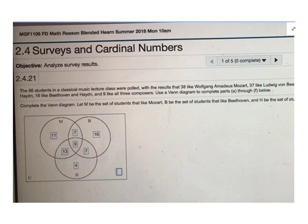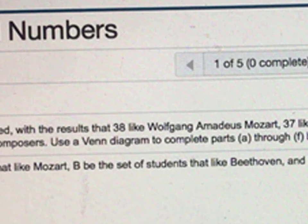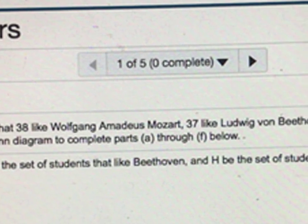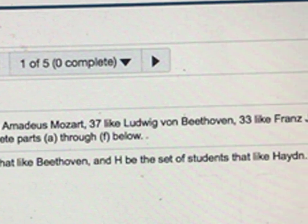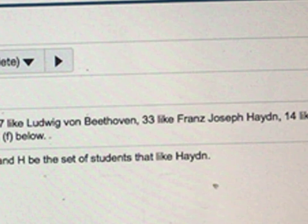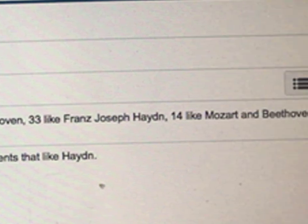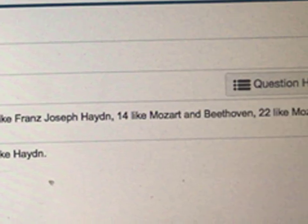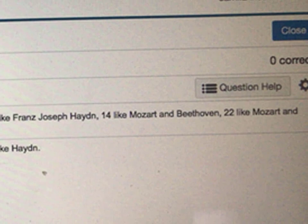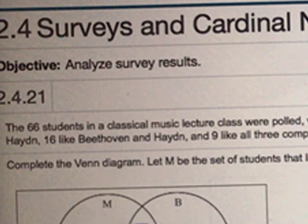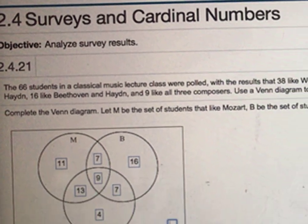We are told that 66 students in a classical music lecture class were polled, and the result was that 38 like Wolfgang Amadeus Mozart, 37 like Ludwig von Beethoven, 33 like Franz Josef Haydn, 14 like Mozart and Beethoven, 22 like Mozart and Haydn, 16 like Beethoven and Haydn, and 9 like all three.